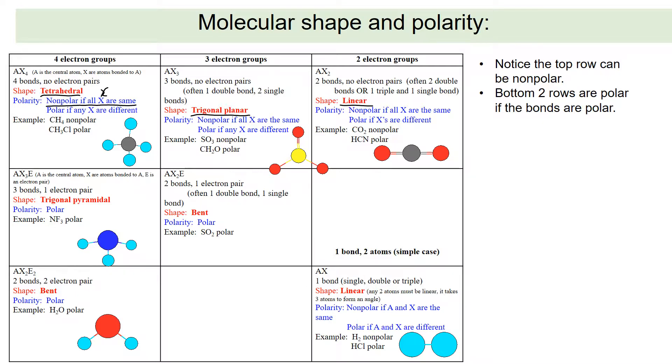These other two shapes, trigonal pyramidal and bent, and remember our bent looks something like this. The distinction about these is as you go around the central atom, it's not all the same. So I go around the central atom. I have fluorine, fluorine, fluorine, electron pair. Not the same, so it's polar. Same here. I have hydrogen, hydrogen, electron pair, electron pair, so it is polar. They're not the same.